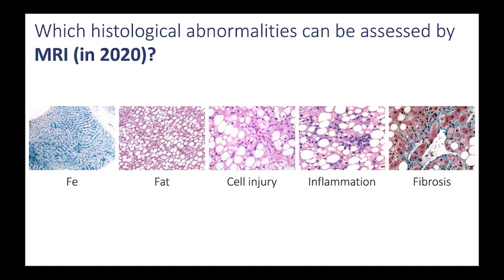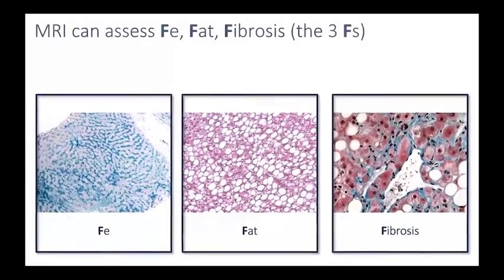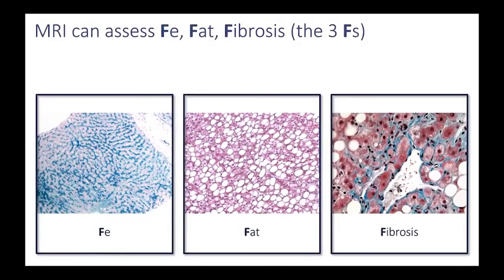I mentioned earlier that many histologic abnormalities can underpin chronic liver disease. Which of these can be assessed reliably by MRI in the year 2020? Three of these abnormalities can be evaluated by MRI, and I call these the three Fs — iron, fat, and fibrosis — and these will be the focus of today's lecture.